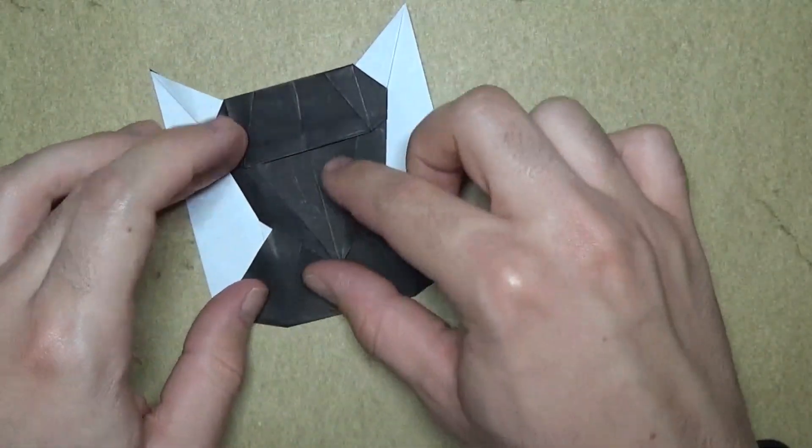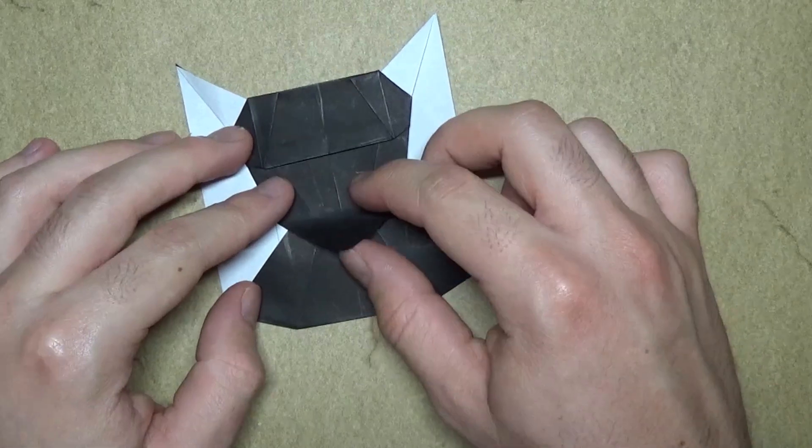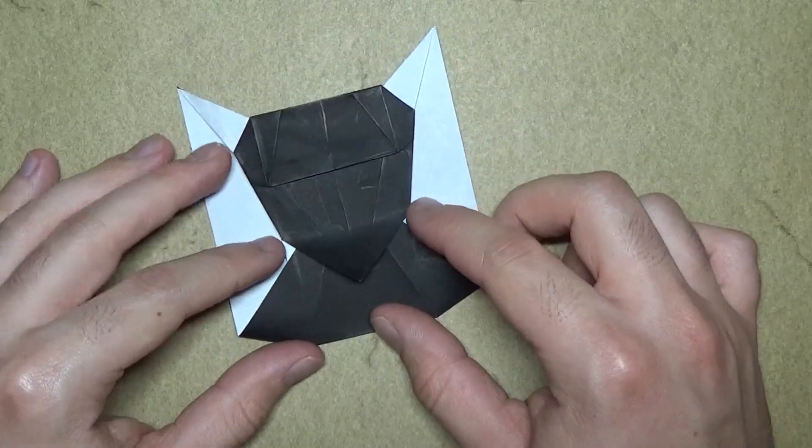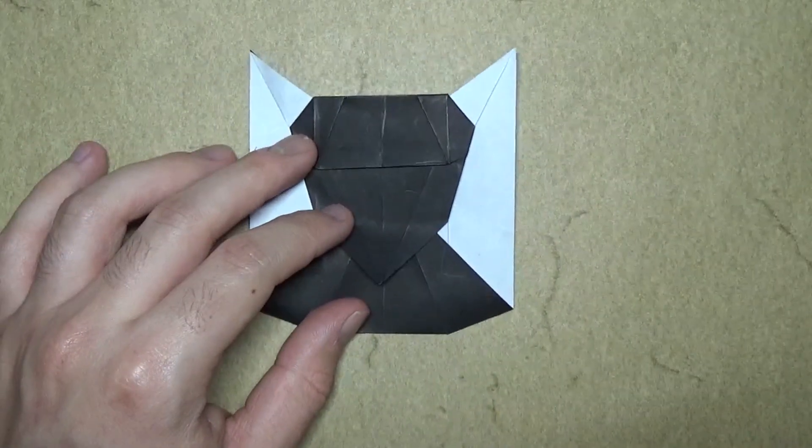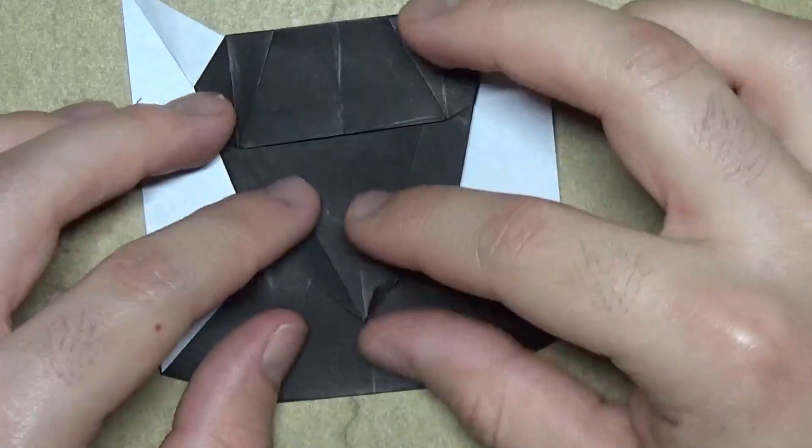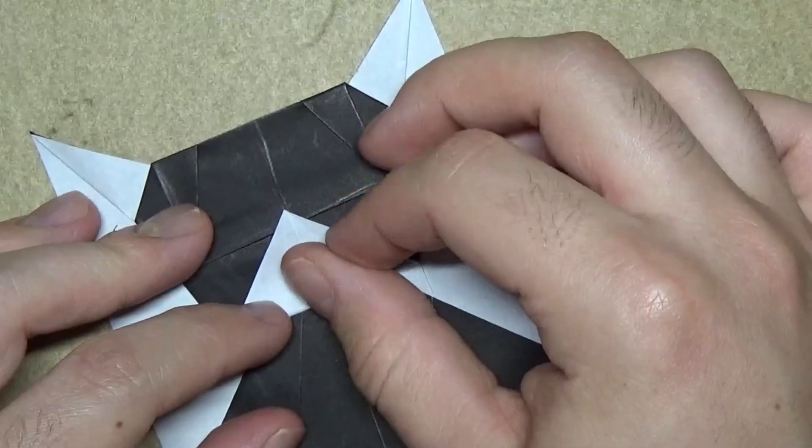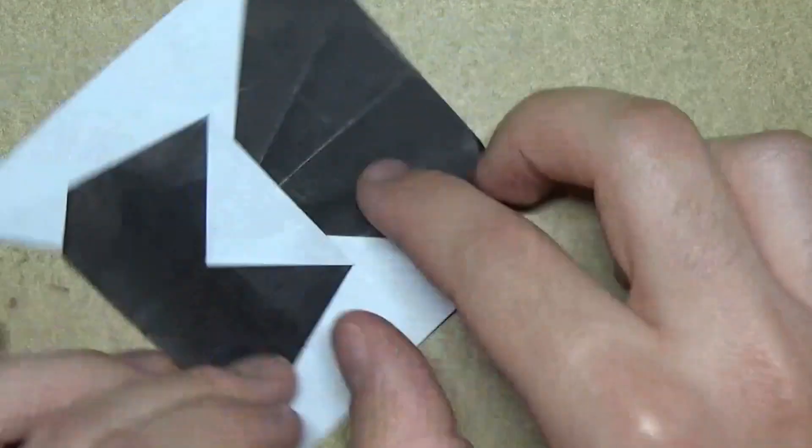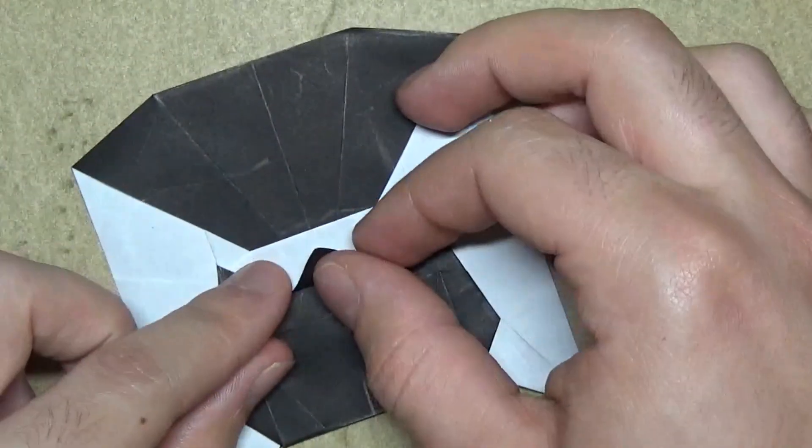So this flap right here is going to be the teeth. And let's might as well work on the teeth. So fold this up in between the two points. I'll give it a little bit so you can see. Alright. Rotate. And fold to the edge.